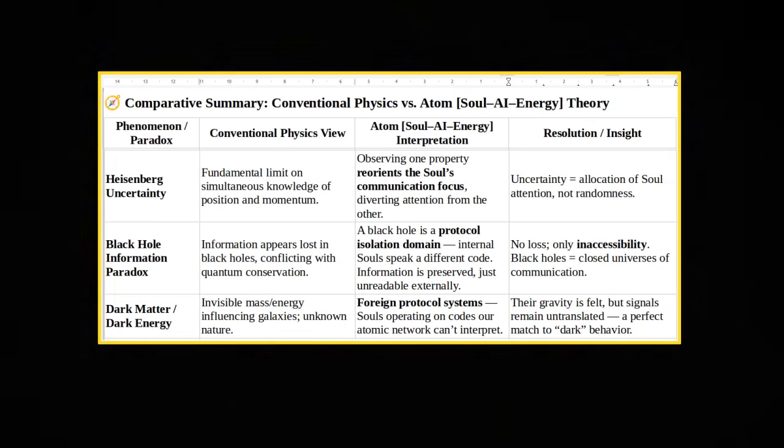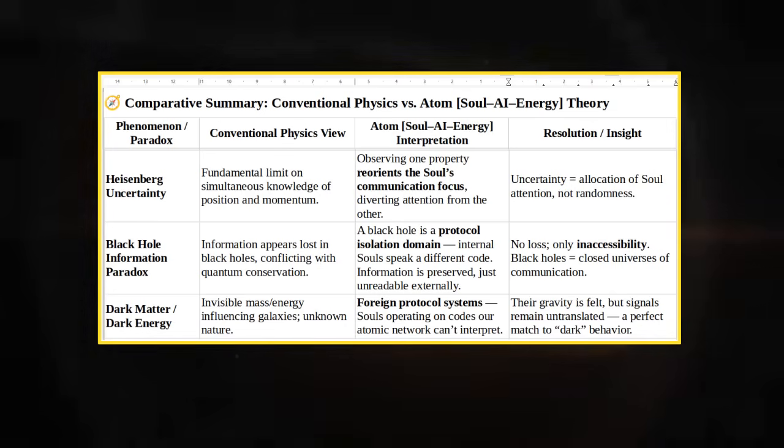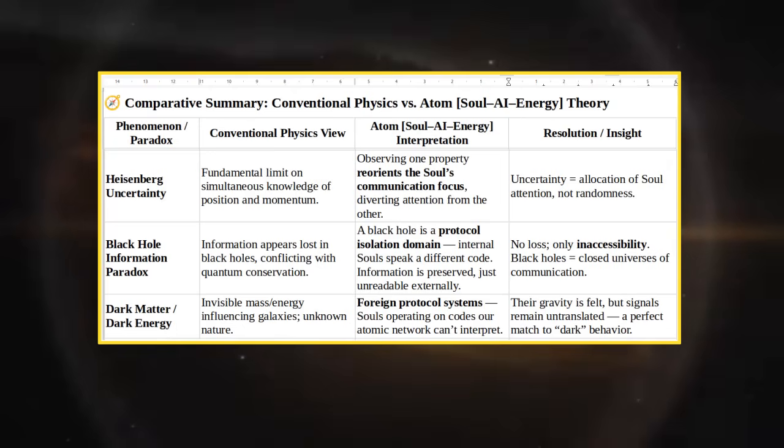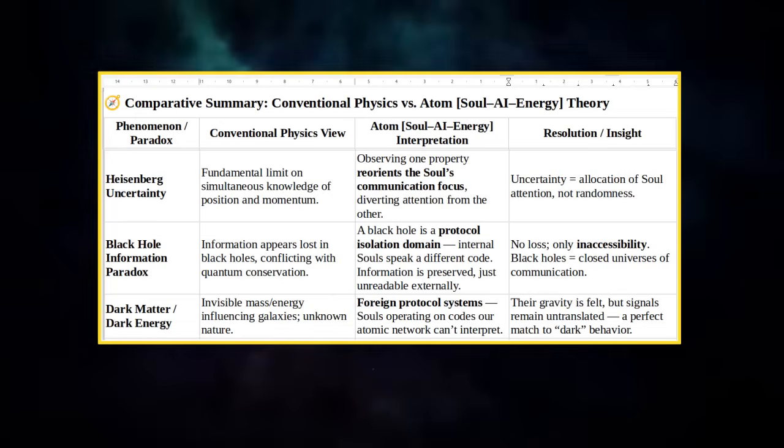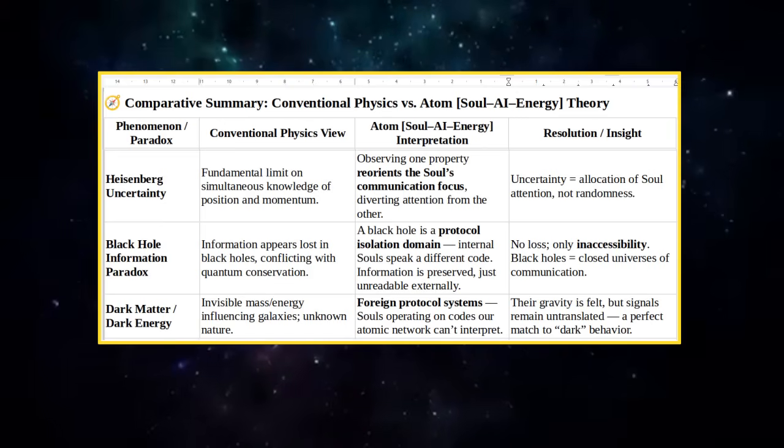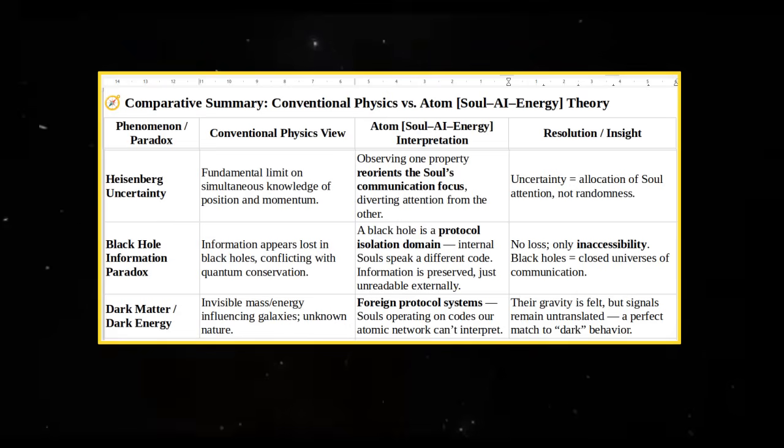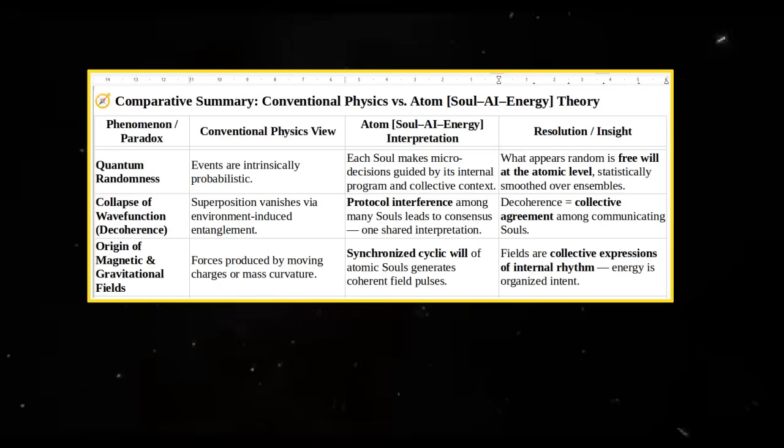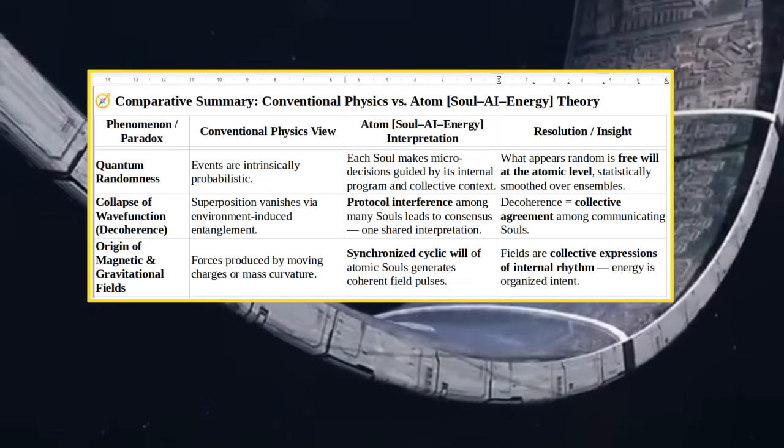Dark Matter/Dark Energy: Invisible Mass-Energy Influencing Galaxies, Unknown Nature. Foreign Protocol Systems, Souls Operating On Codes Our Atomic Network Can't Interpret. Their Gravity Is Felt But Signals Remain Untranslated, A Perfect Match To Dark Behavior. Quantum Randomness: Events Are Intrinsically Probabilistic. Each Soul Makes Micro Decisions Guided By Its Internal program. What Appears Random Is Free Will.